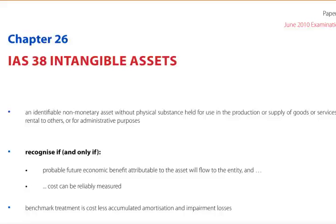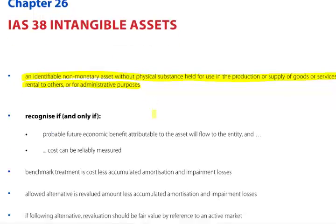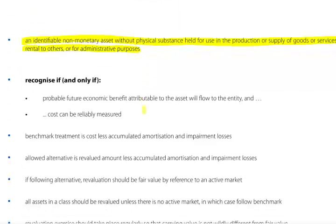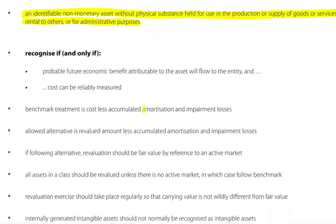An intangible asset is defined as an identifiable non-monetary asset without physical substance, held for use in the production or supply of goods or services, for rental to others, or for administration purposes. It should be recognised if and only if there will be probable future economic benefits attributable to the asset flowing to the entity, and the cost can be reliably measured.